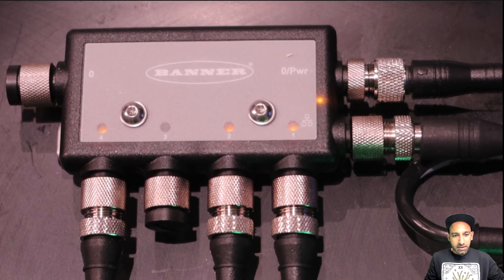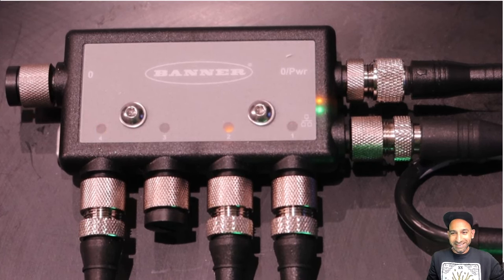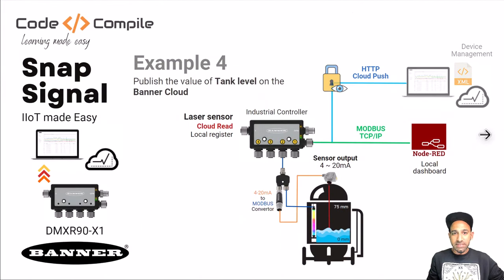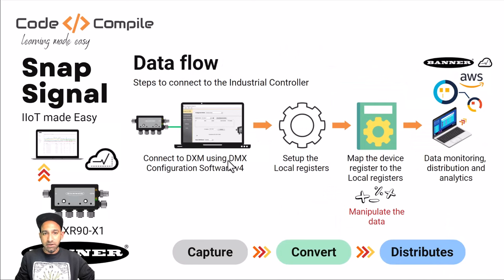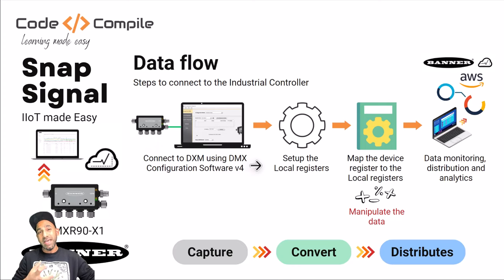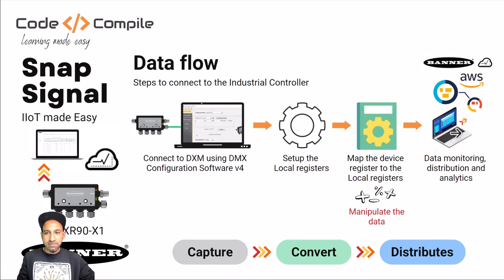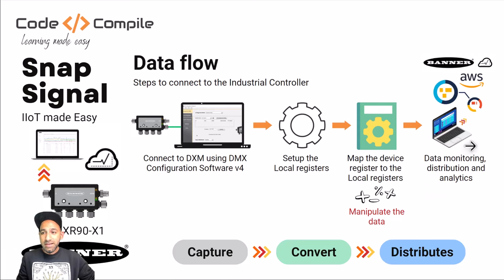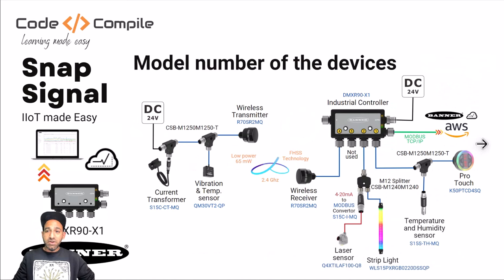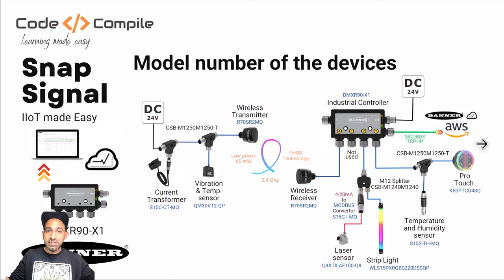To summarize what we did: we connected the DXM controller to the DXM software, set up local registers, captured data from sensors, converted the data using scaling, mapped and manipulated the data, and then sent it to the cloud or to Node-RED using Modbus TCP/IP or HTTP cloud. So the workflow is: capture, convert, distribute — really quick. You can imagine many applications with these sensors and the controller, converting sensor signals to Modbus to easily send to further networks, communication devices, or a data logger.